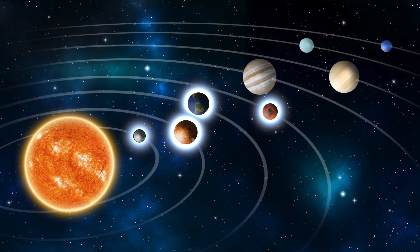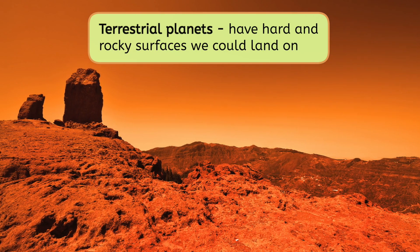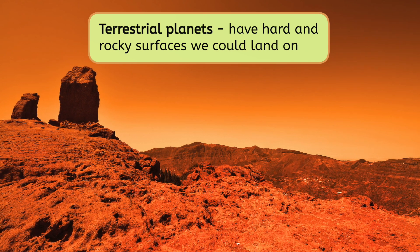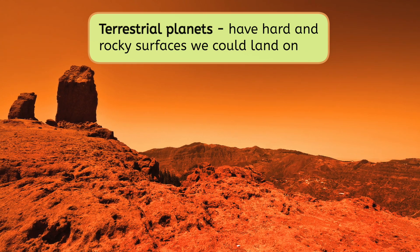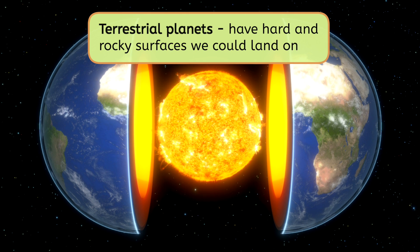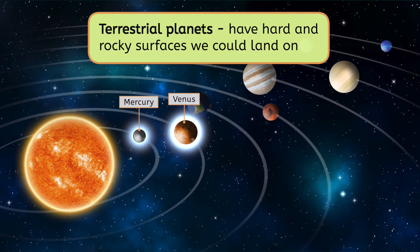The four planets closest to the Sun are terrestrial planets. Terrestrial planets are smaller in size and have hard and rocky surfaces that we could land on. Under the hard crust of the terrestrial planets, you'll find a dense core made of heavy metals. Let's take a closer look at the closest terrestrial planets, Mercury and Venus.